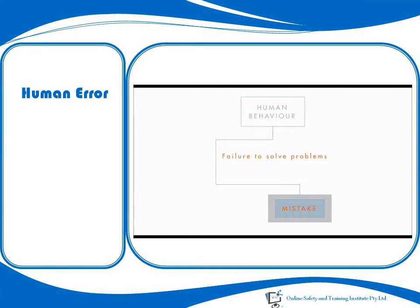Mistakes are caused by failures to solve problems. There is nothing to beat people for solving new problems when they have the time. But when they're under time stress or simply don't know all the facts, people can still come to some conclusion, and if that conclusion is wrong, we call it a mistake. Lousy plan, not lousy execution, is the problem.